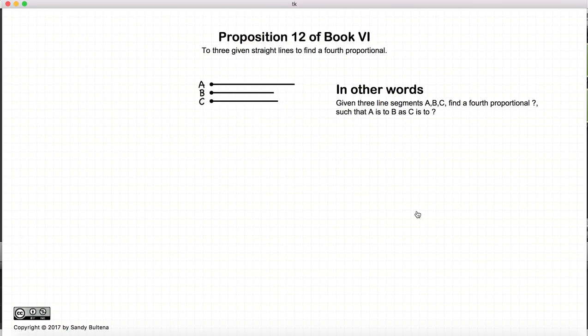Now in this proposition, basically if we are given three line segments A, B, and C, and we have a ratio of A to B, we want to find a fourth line segment such that the ratio of C to this fourth line segment will be equal to the ratio of A to B. So in other words, we have this line segment which we don't know yet, and we want this condition to be true. So this proposition will show how to find such a line segment.